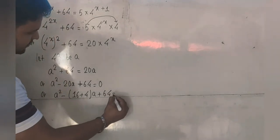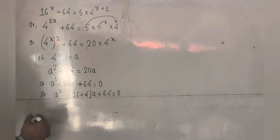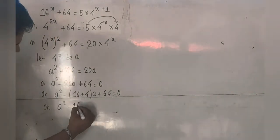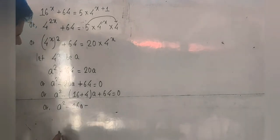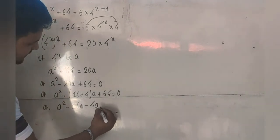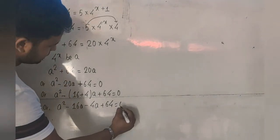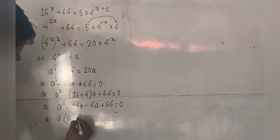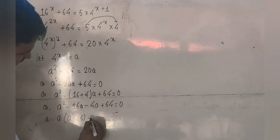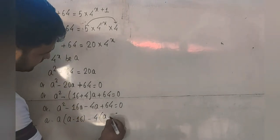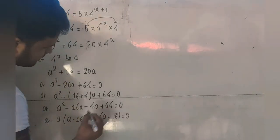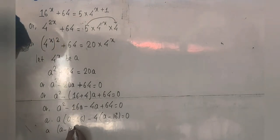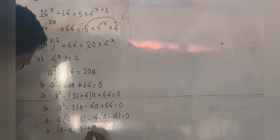So a squared minus 20a plus 64 equals 0. Everyone knows how to factorize this. We get a squared minus 16a minus 4a plus 64 equals 0. Taking a common from the first two terms gives a minus 16, and taking 4 common from the last two terms also gives a minus 16. So we can write this as a minus 16 into a minus 4 equals 0.